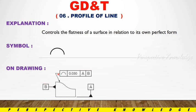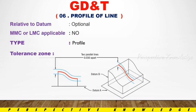If we put the profile of line here, the value is 0.03. This is datum A. Datum B depends on the profile of line. If we put the profile of line here, this is the relative datum option. If we measure the value, we can get the profile of line.